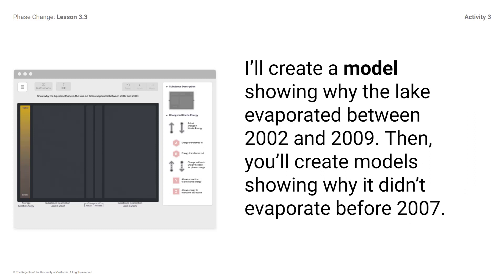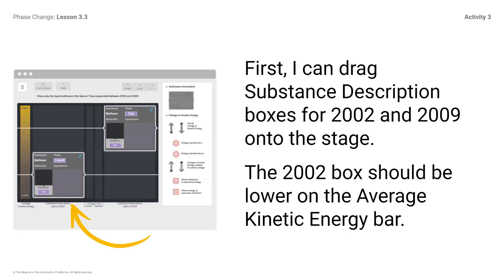I'll create a model showing why the lake evaporated between 2002 and 2009. Then you'll create models showing why it didn't evaporate before 2007. First, I can drag Substance Description boxes for 2002 and 2009 onto the stage.